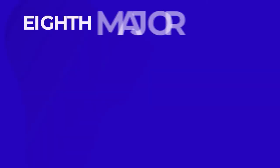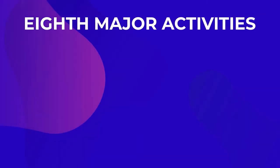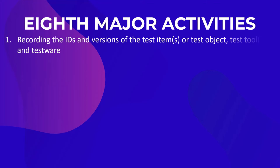Now we will cover 8 major activities of test execution, as mentioned in the ISTQB syllabus. The first activity is recording the IDs and versions of the test item or test object, test tools, and testware.